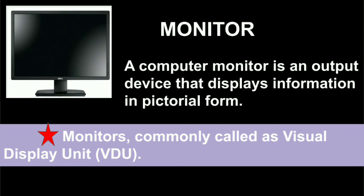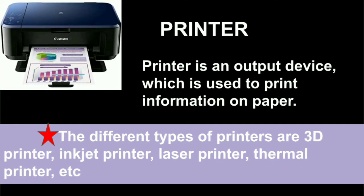Monitor — it is an output device that displays information in pictorial form. We can see videos, images, graphics, text — anything in the monitor.